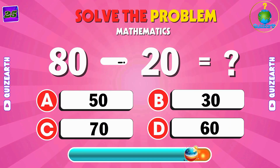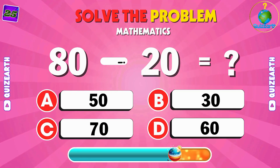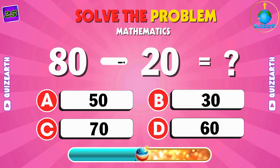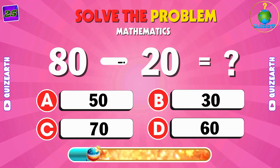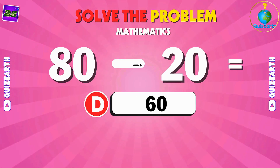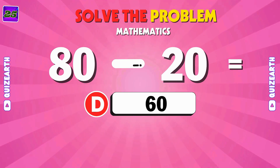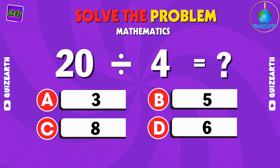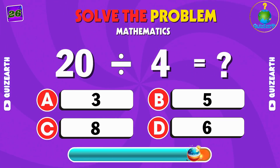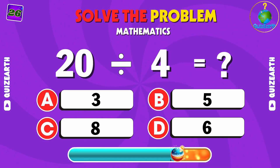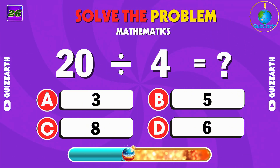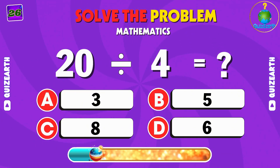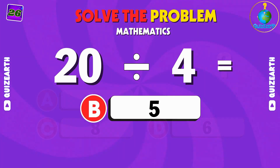Subtract 20 from 80 — what's left after the takeaway? D: 60. Divide 20 by 4 — how many times does it go? B: 5.